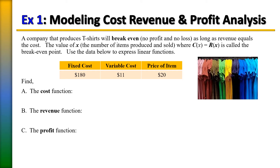For example, to produce 100 t-shirts it's going to cost $10 in materials, so to sell 200 t-shirts that would cost $20 in materials. Variable costs change based on how many items you produce. Then there's the price of the item — in this case the t-shirts are selling for $20 each.